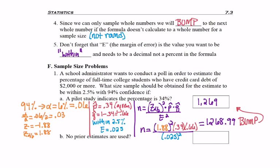That's how many students should be sampled so that we can find out what percent have a true proportion of debt of $2,000 or more. We don't expect our sample size of 1,269 to end up being exactly 34%. It probably will be close to that because that's what the pilot study gave us. We also know that we're making a confidence interval, so we're kind of estimating the true population proportion.